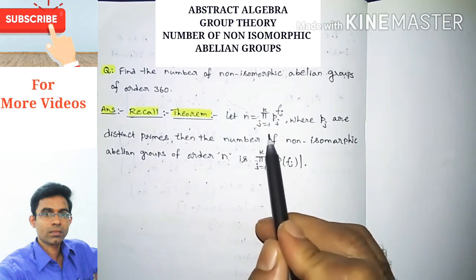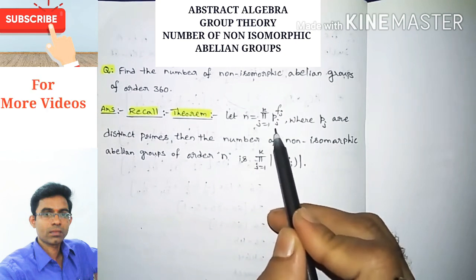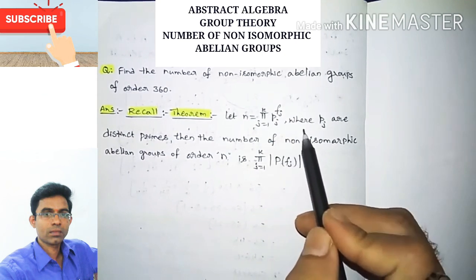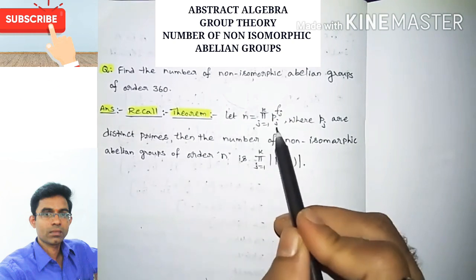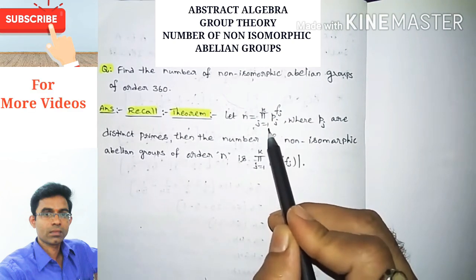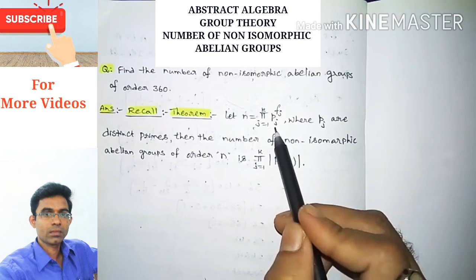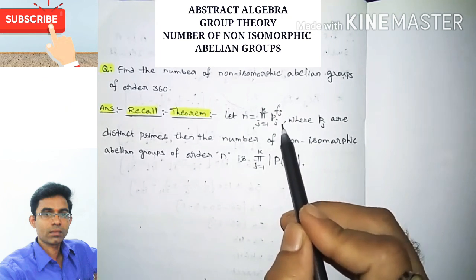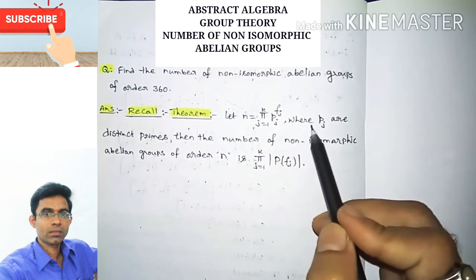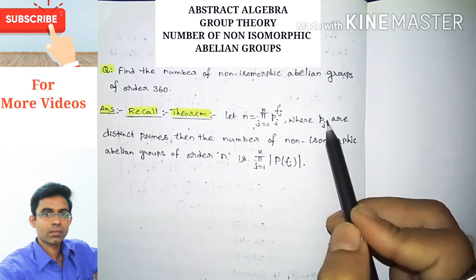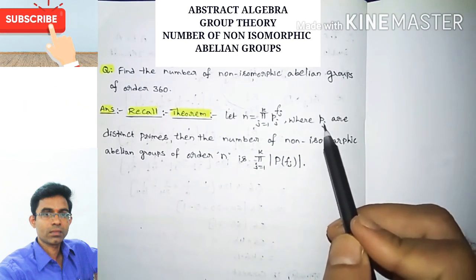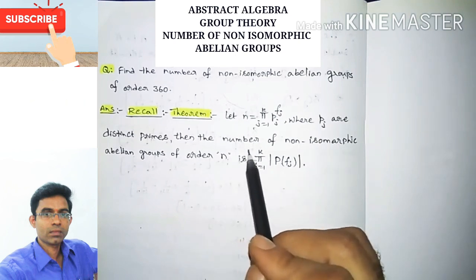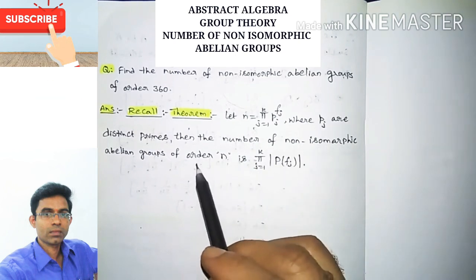The theorem statement is: n is equal to the product for j equals 1 to k of p_j to the power f_j, that is p1 to the power f1, p2 to the power f2, and so on, pk to the power fk, where p1, p2, ..., pk are all distinct primes.